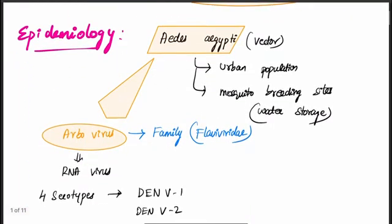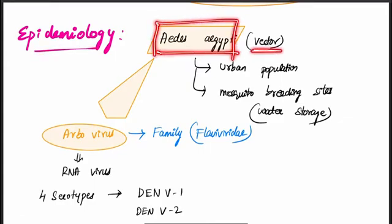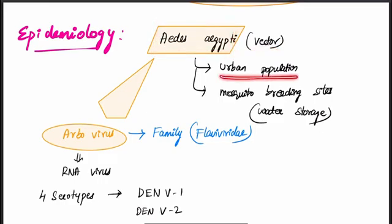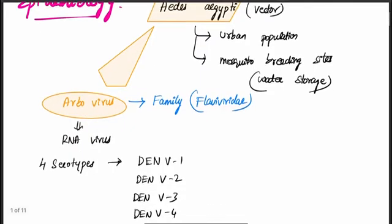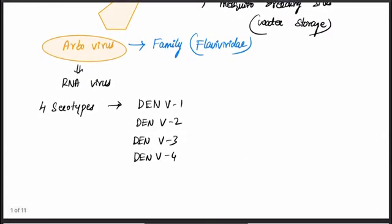Coming to the epidemiology of Dengue — it is transmitted by Aedes aegypti, which acts as the vector. It is more commonly seen in urban populations and breeds in stored water. The causative virus is an Arbovirus, an RNA virus belonging to the family Flaviviridae, and there are four serotypes: Dengue V1, V2, V3, and V4.